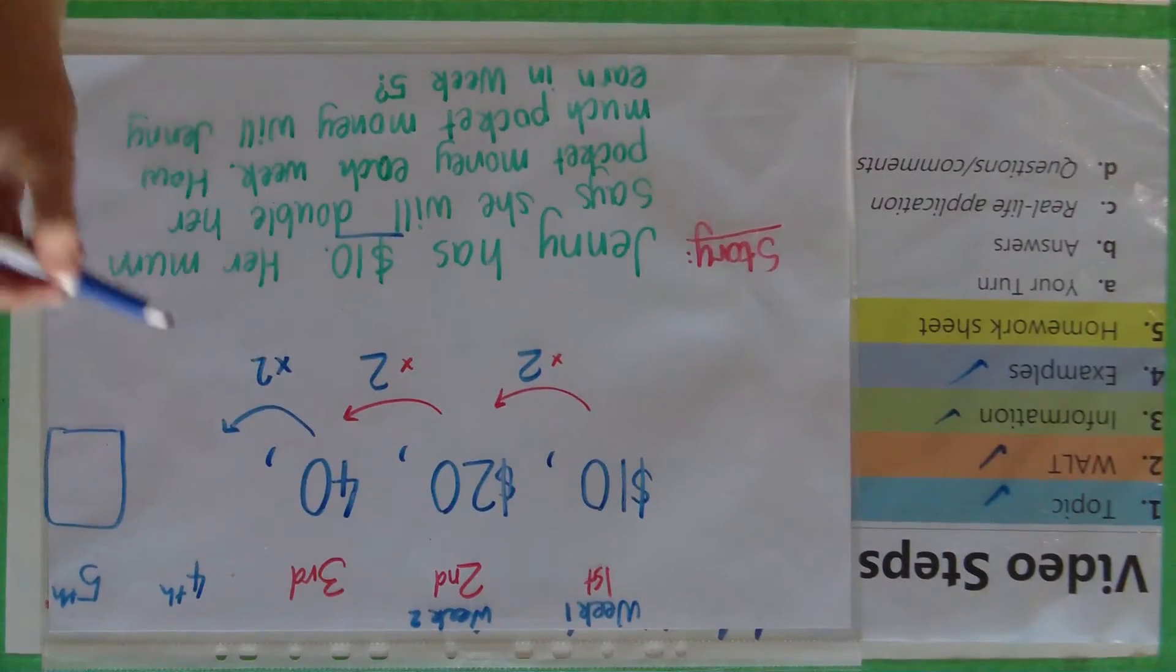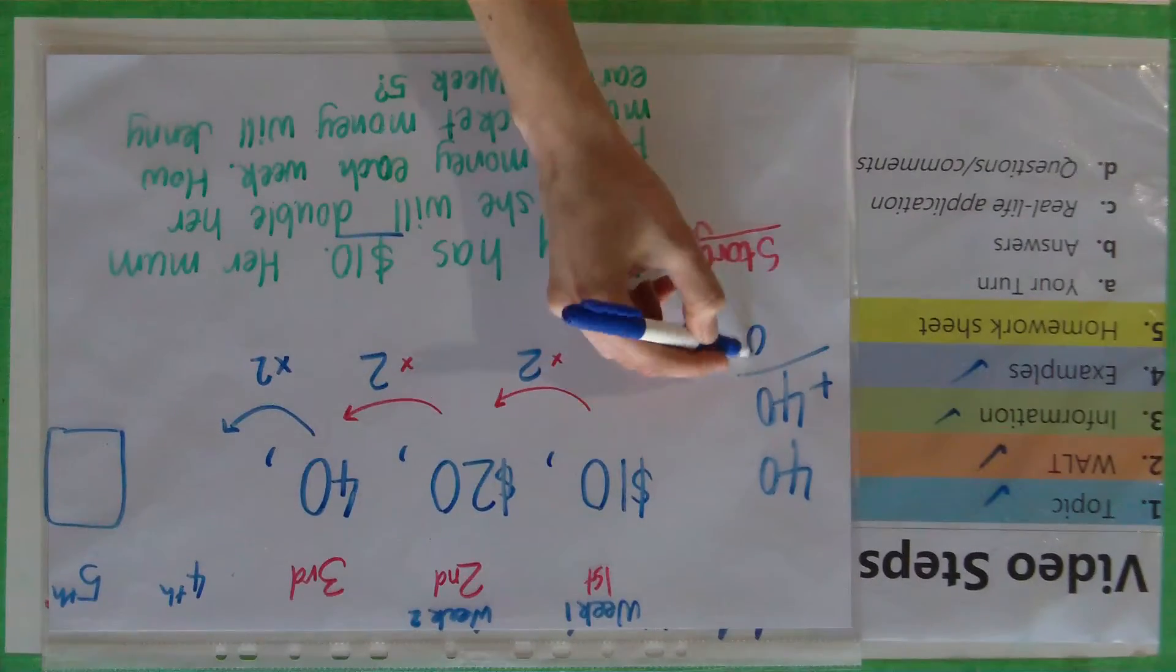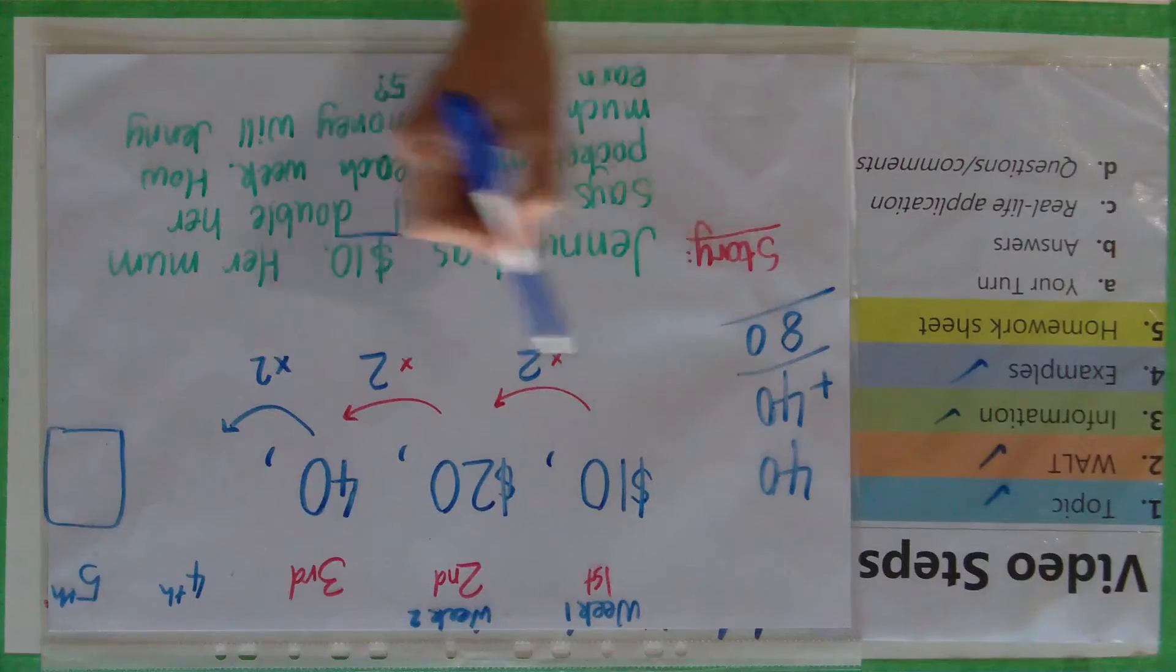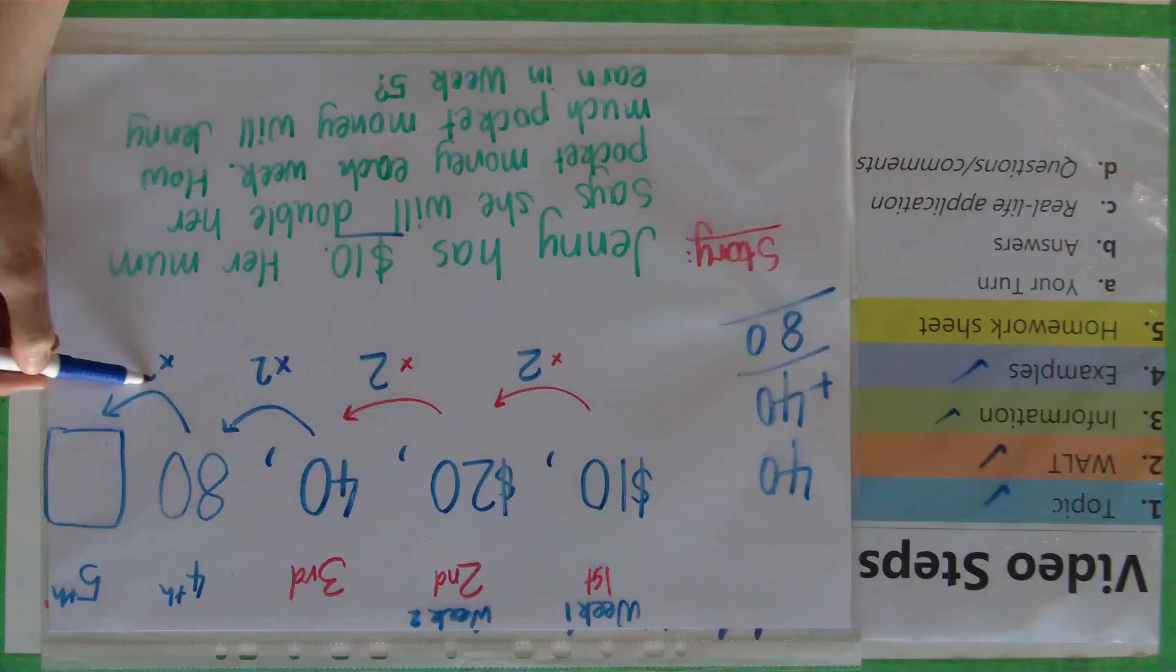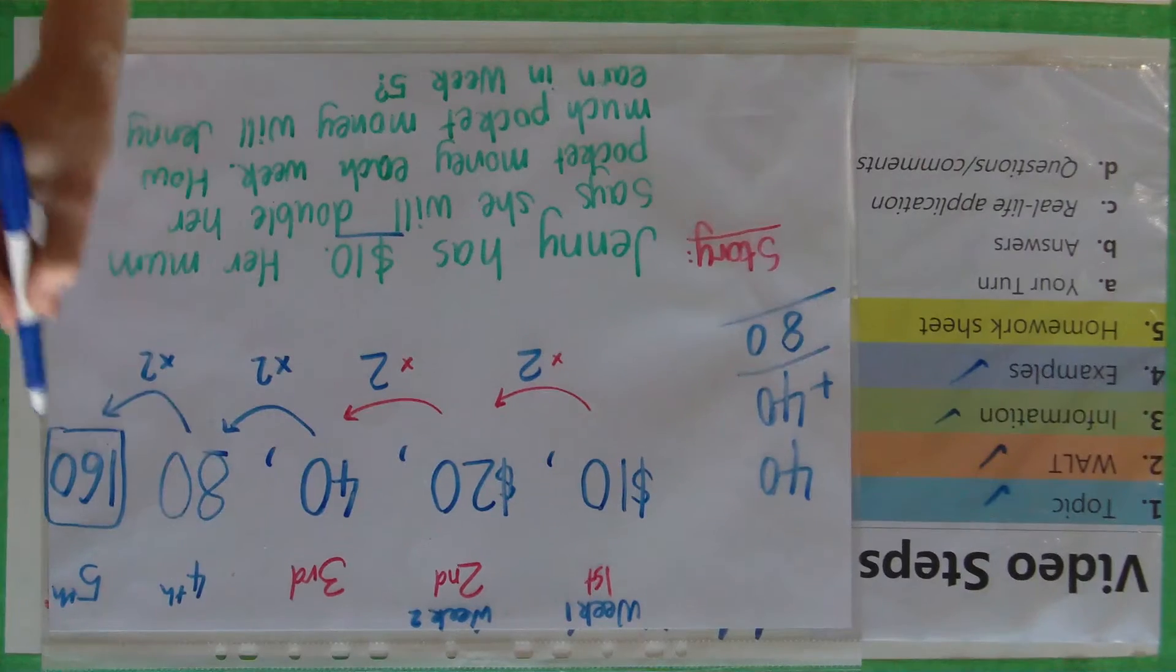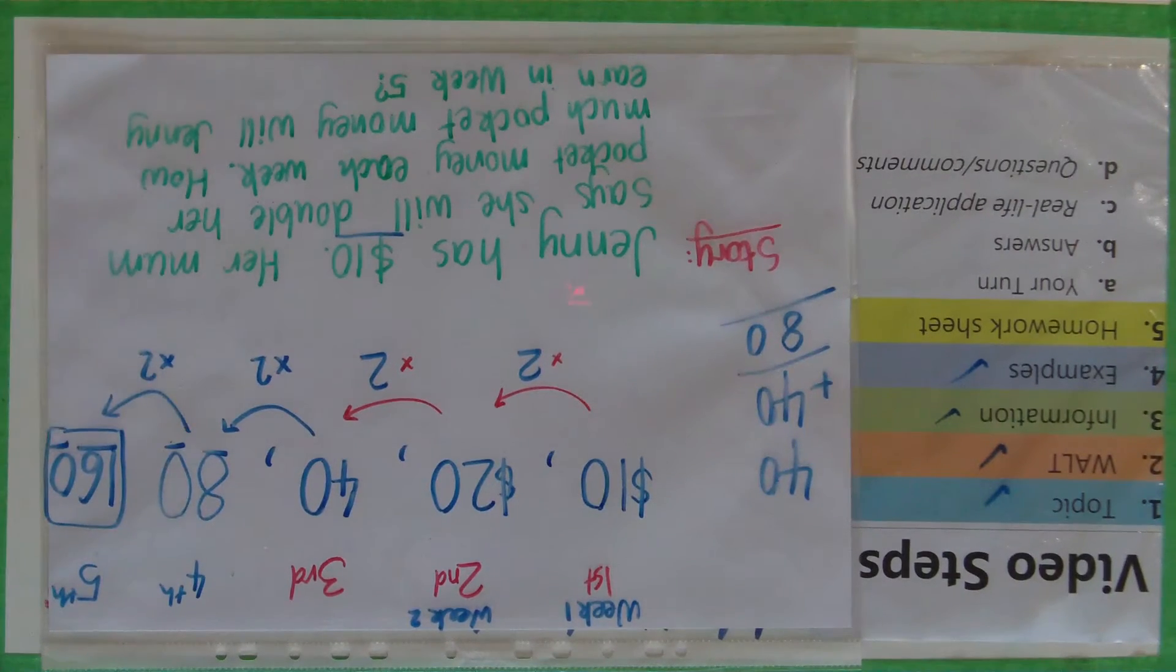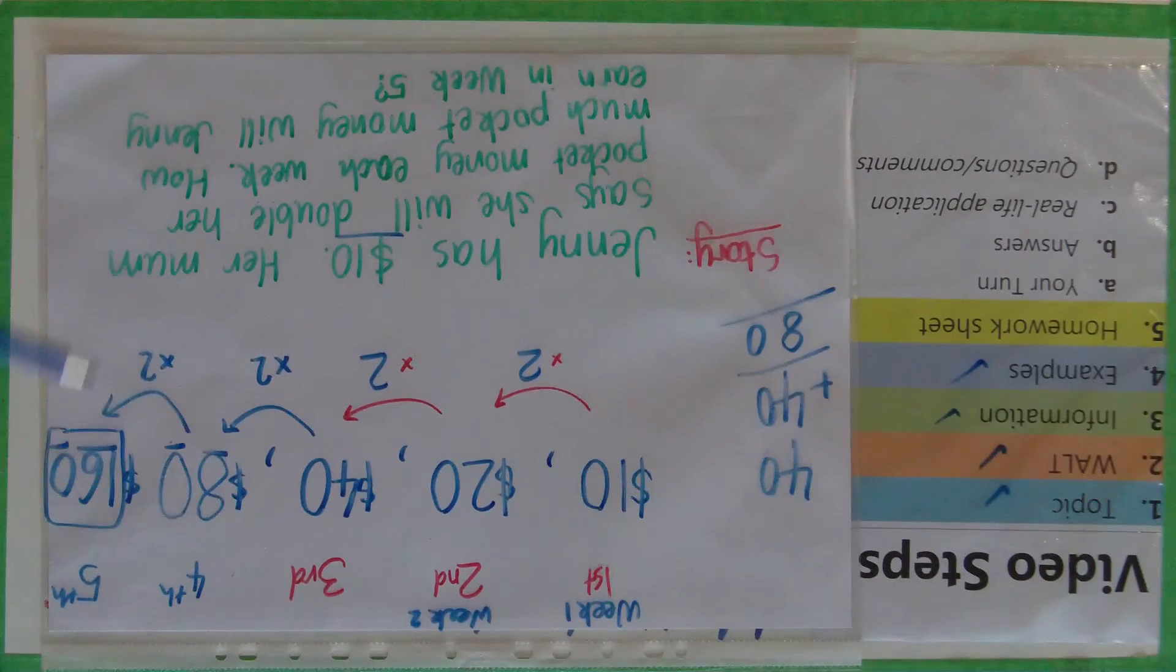So 40 times 2 is 2 lots of 40, you can do it the repeated addition way, so 0 plus 0 is 0, 4 plus 4 is 8, so that next one would be 80. And then once again we times that by 2, 80 times 2 is 160 because 8 times 2 is 16 and we pop that 0 at the end because we're multiplying. And that would be what she would be earning. That's just an example question, I'll just go through a few others.